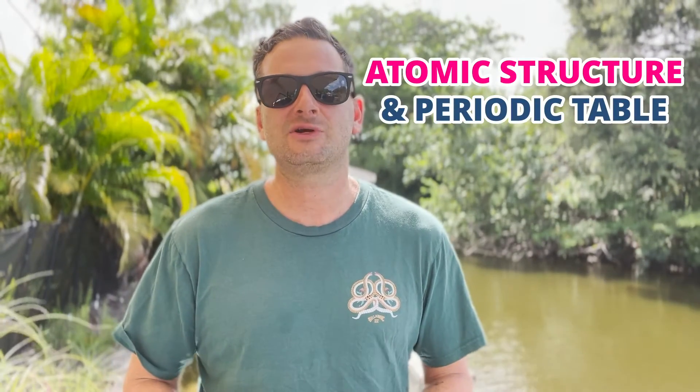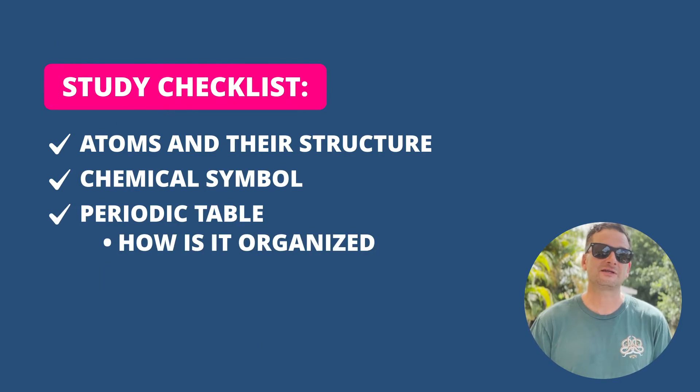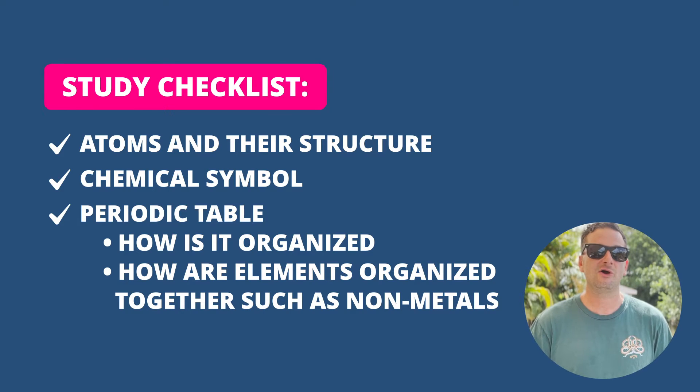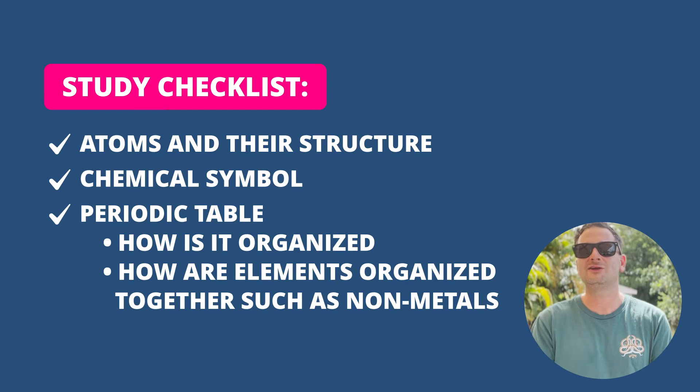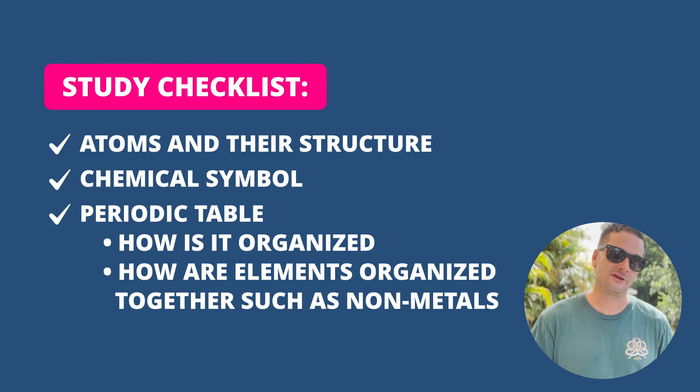The first topic is atomic structure and the periodic table. You need to know what an atom is — the basic properties and characteristics — and understand the parts of an atom: protons, electrons, and neutrons. You'll also need to know what the periodic table is, how it's organized, how many elements there are, and how to read a chemical symbol. It's organized by groups and periods, with similar elements grouped together such as metals, non-metals, and noble gases. You don't need to memorize it, but you do need to know how it works.